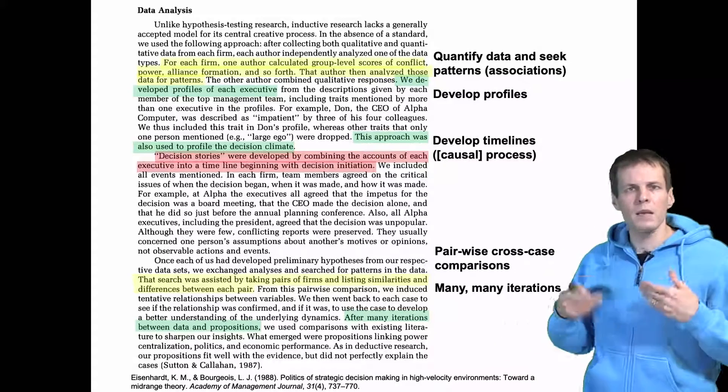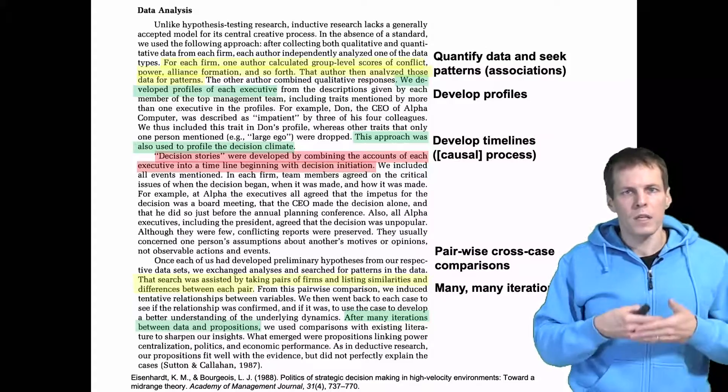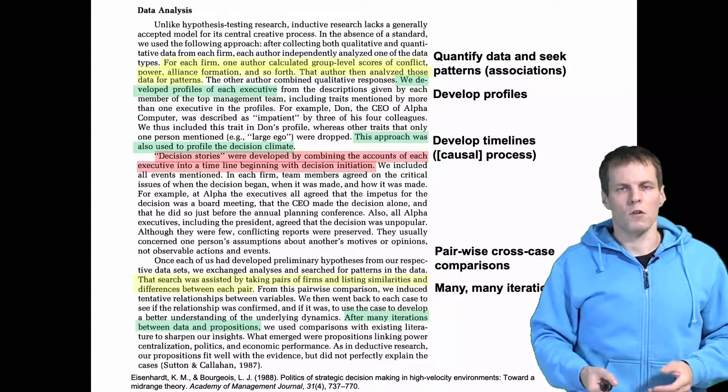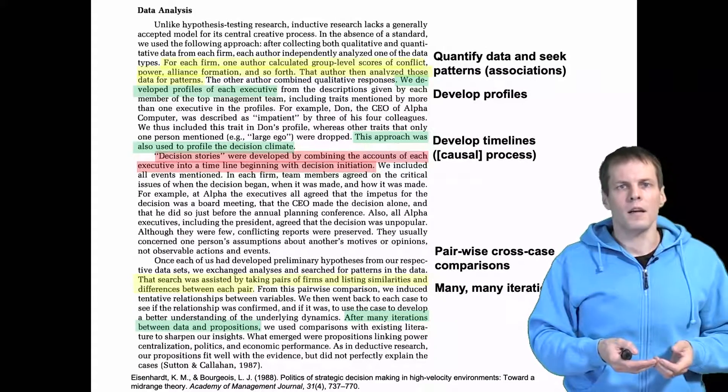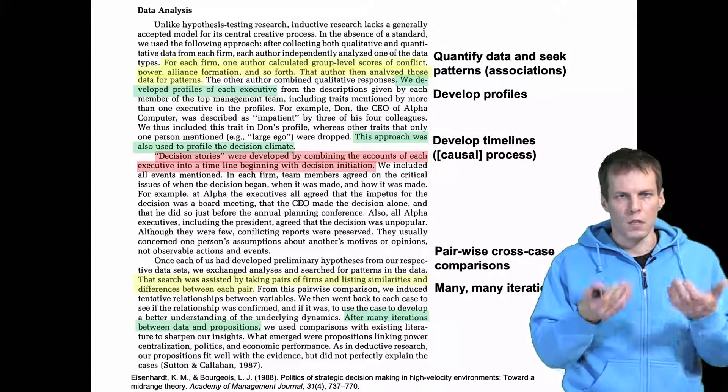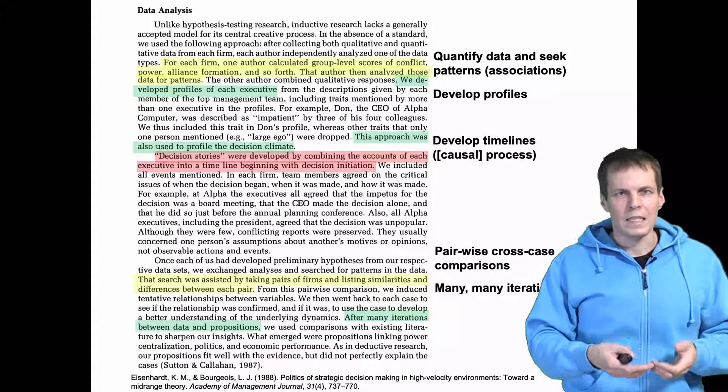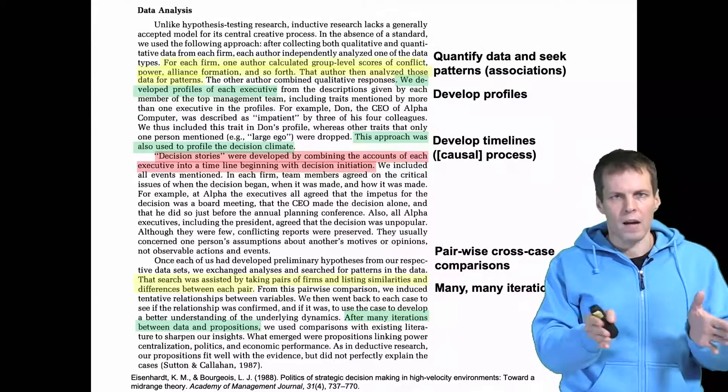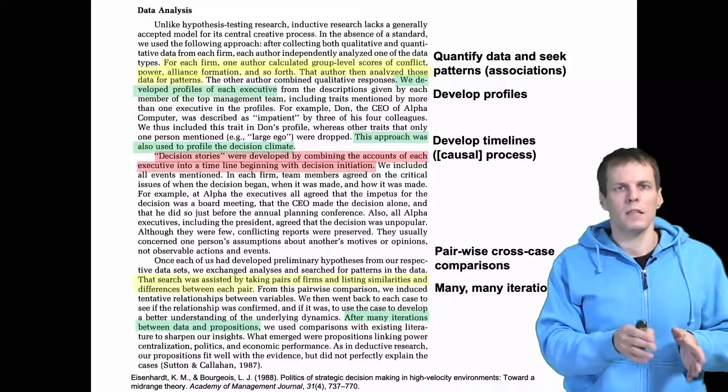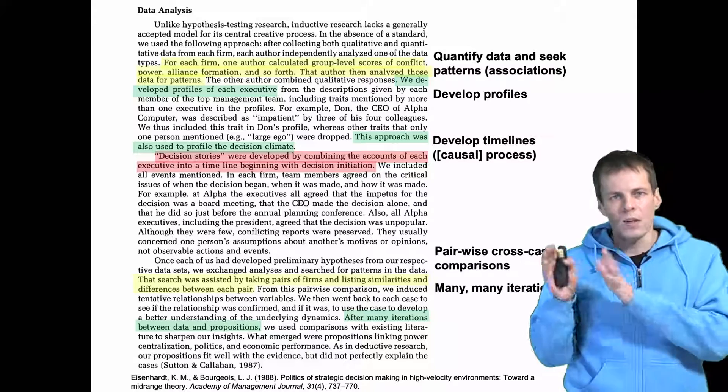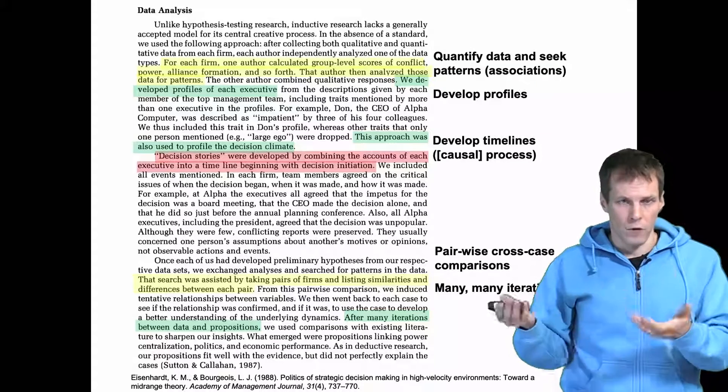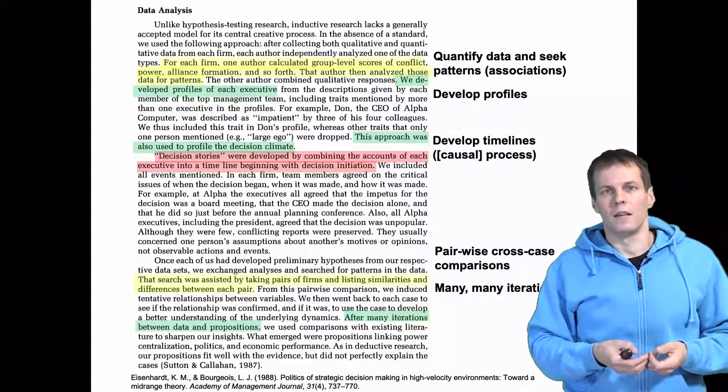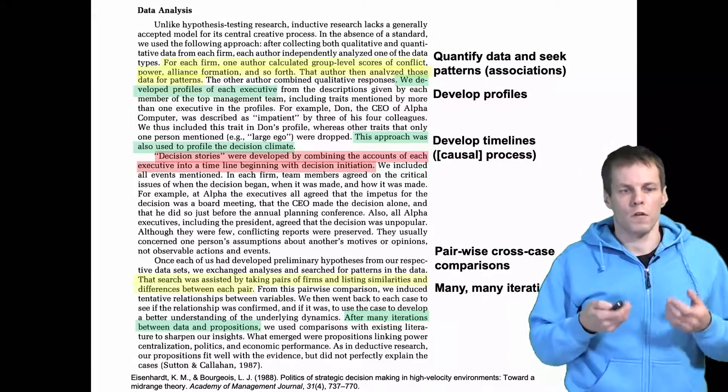Then you iterate this many many times and from this a theory emerges. So you first seek patterns, then based on those patterns you start to seek evidence for causality and you iterate many many times because sometimes when you find a pattern in for example two cases, that pattern may not exist in other cases and therefore it might not be the ideal pattern to follow when you construct your theory.